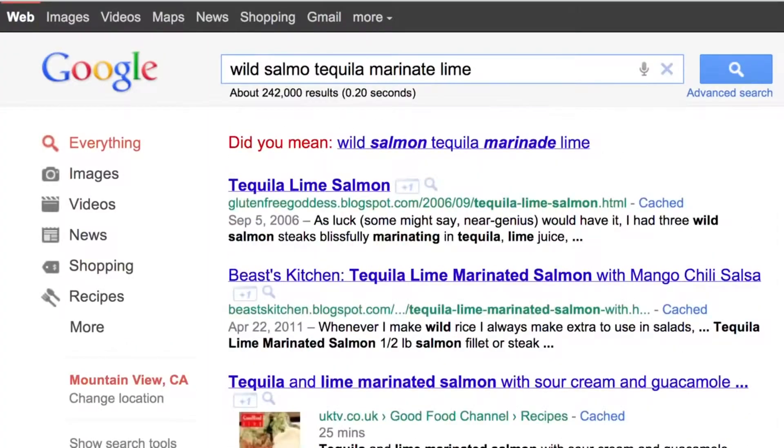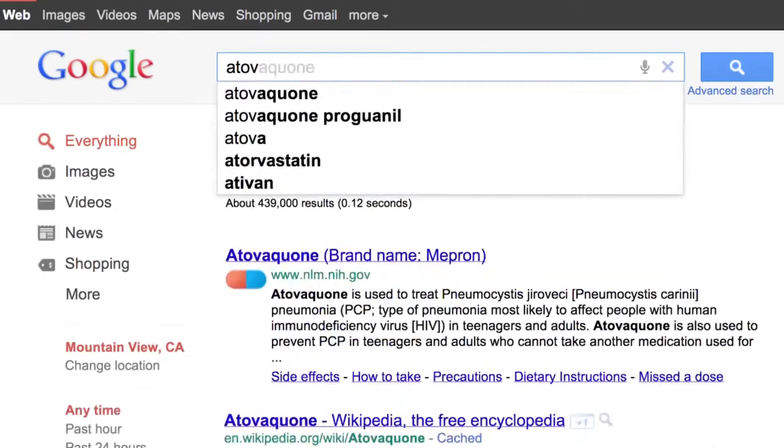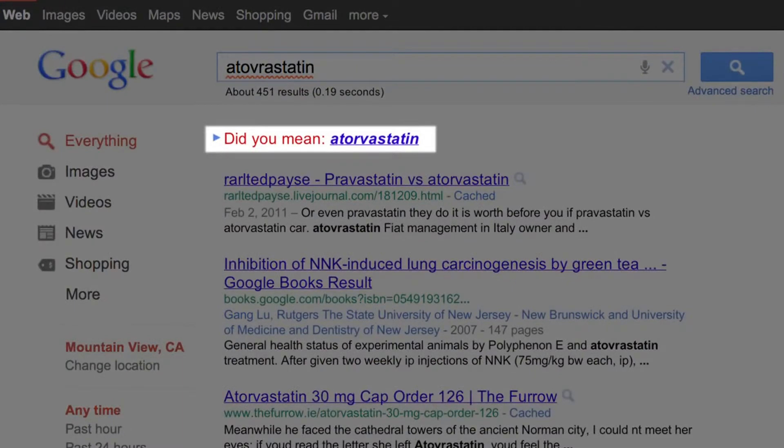For many years now, Google has been offering spelling suggestions for queries that contain typos or misspellings. So sometimes you'll type a query and you might see, did you mean, and then an alternate query. If you type a misspelling of your medicine and you don't click on the did you mean, you might be getting results that contain that misspelling. And they tend not to be high-quality results.